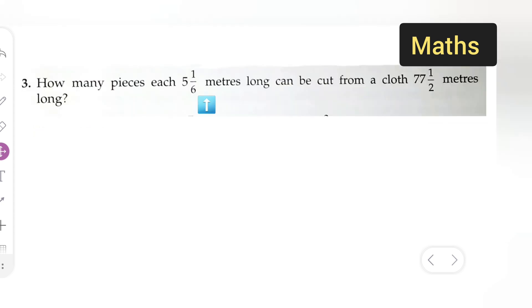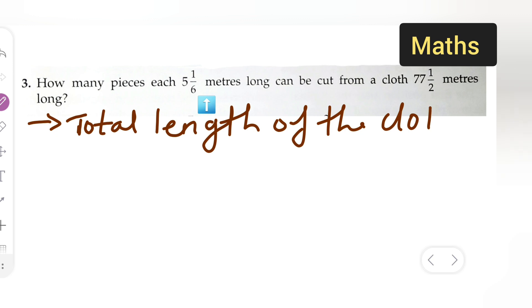First, you all will write down the question. Total length of the cloth - what is the total length of the cloth? Write down total length of the cloth. The total length of the cloth is given as 77 and 1/2 meters.